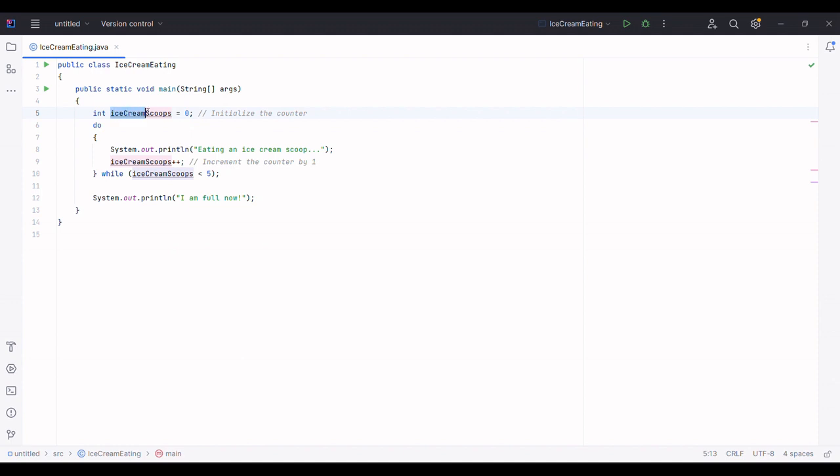Inside the loop we print the message 'eating an ice cream scoop' and then increment the ice cream scoops variable by one.